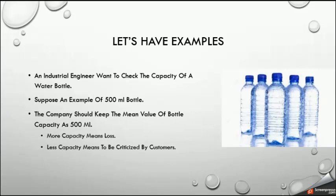Suppose this product type has a capacity supposed to be 500 ml of water. Our assumption for our production line is that the mean value of all bottles — the average — should be as close as possible to 500 ml. So our hypothesis is that the mean value of the capacity of any water bottle is 500 ml.